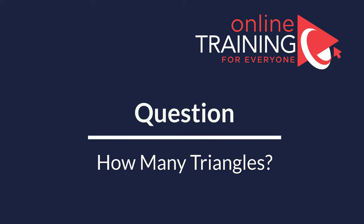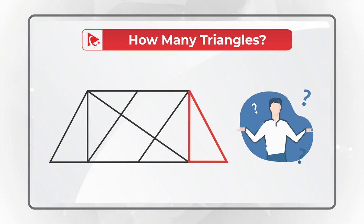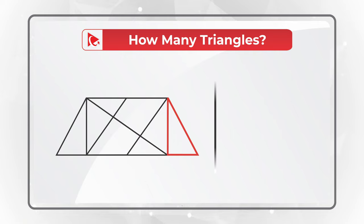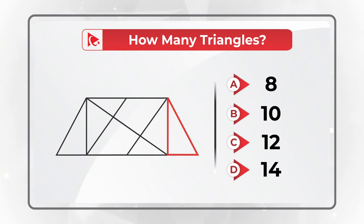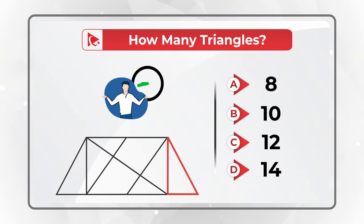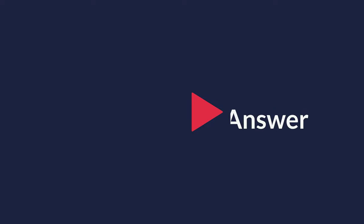When I saw this question, I couldn't believe the answer. You need to determine how many triangles are presented in a given shape. You see one triangle highlighted in red, but you have four different choices: choice A is 8 triangles, choice B is 10 triangles, choice C is 12 triangles, or choice D is 14 triangles. How many do you see? Give yourself a little bit of time to see if you can come up with the solution.